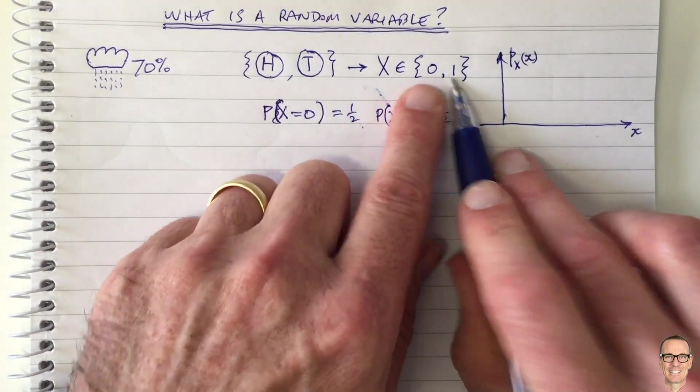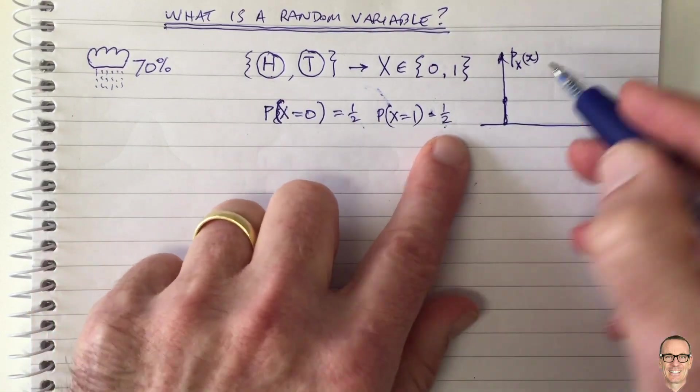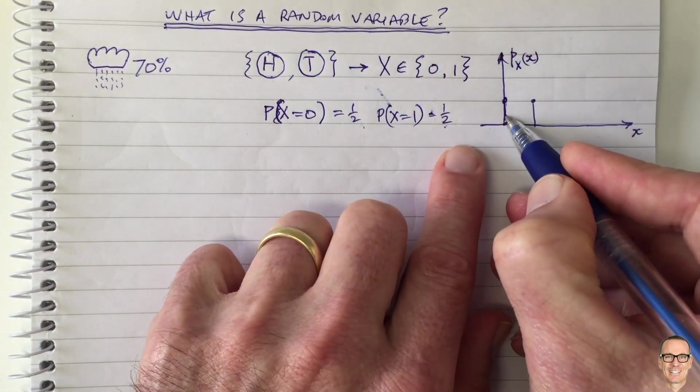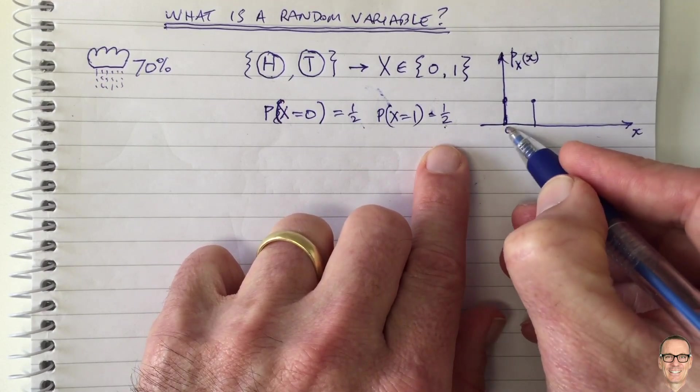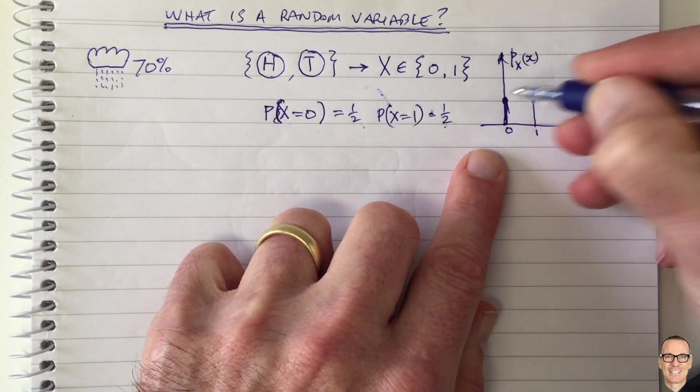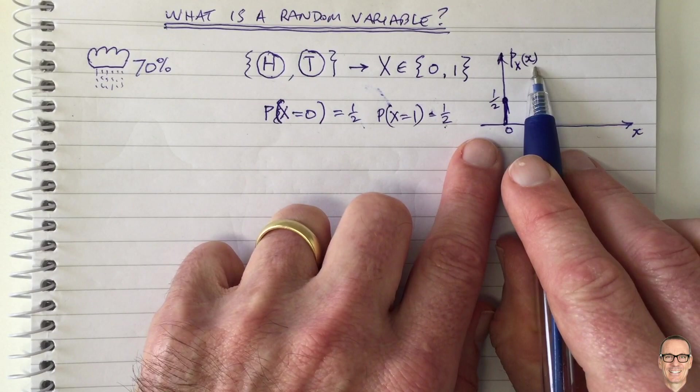So in this case, it can only take two values, 0 or 1, and it takes them with the same probability. So this is the probability we're plotting here on the vertical, and the horizontal here is the values it can take. It can only take 0 or 1, and it has a half chance of a 0 and half chance of a 1. This is the probability density function.